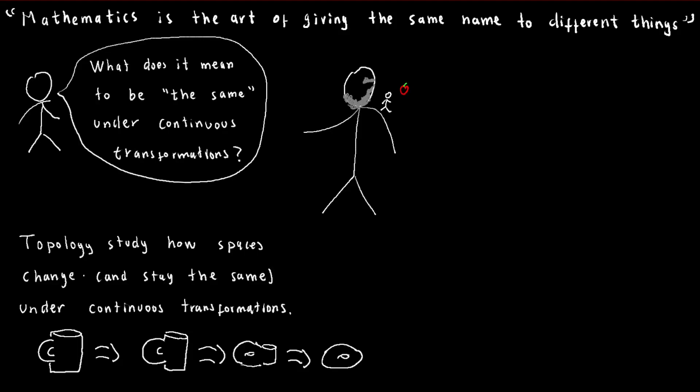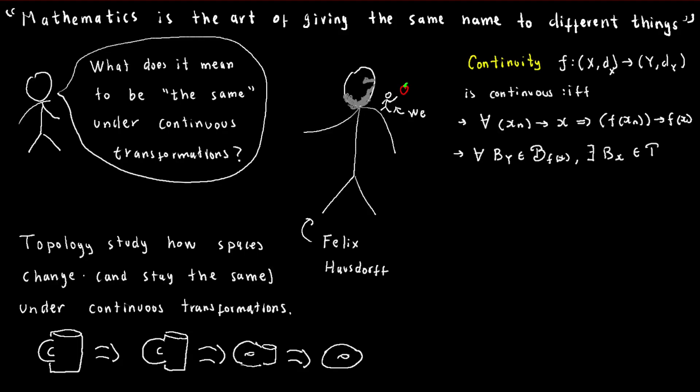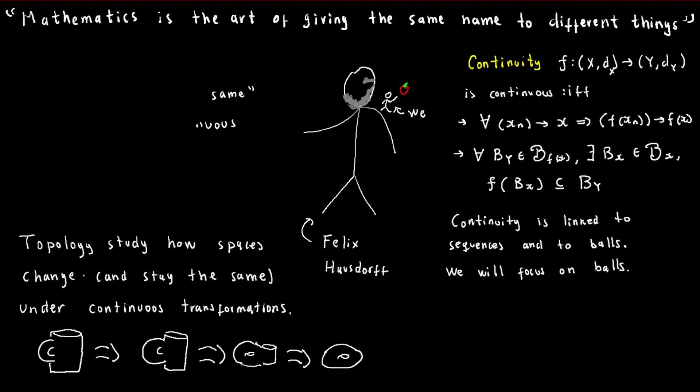Luckily, we can stand on the shoulders of mathematical giants and pluck the ripe fruits of their contemplations. We know that continuity is linked to both sequences and open balls, so we'll take a generalized approach based on the latter. But before we delve into that, we need to classify points in metric spaces.